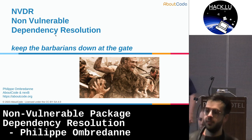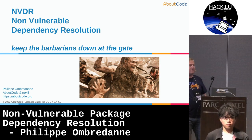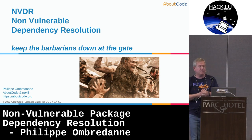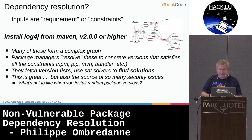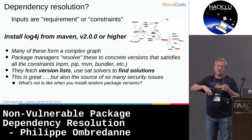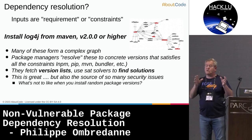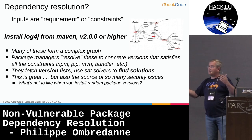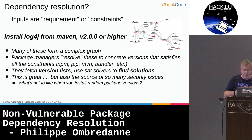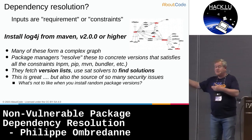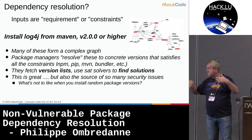I assume every one of you may have been using some kind of software package manager — APT on Debian, pip or poetry for Python, Maven and the likes. What is the essence of what these package managers do? They fetch packages and install them, but they also try to find the correct version — which version needs to satisfy constraints expressed by other packages. For instance, install log4j from Maven version 2.0 or higher.